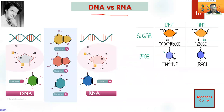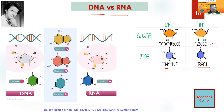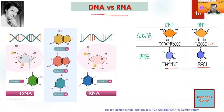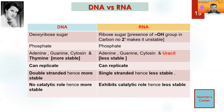Let us see how DNA and RNA differ. As far as sugar is concerned, DNA has deoxyribose sugar whereas RNA has ribose sugar. As far as bases are concerned, DNA has thymine whereas RNA has uracil. The rest — adenine, guanine, cytosine — are present in both RNA and DNA. Regarding strands, DNA has two strands, RNA has one strand. DNA is double-stranded so it is more stable, RNA is single-stranded so it is less stable. DNA does not play any catalytic role, but RNA plays a catalytic role.